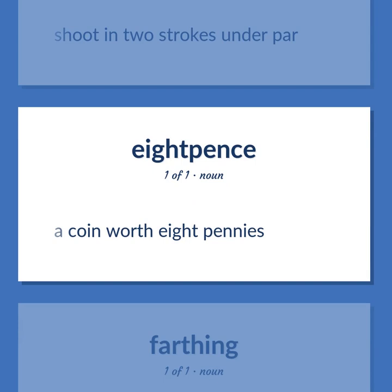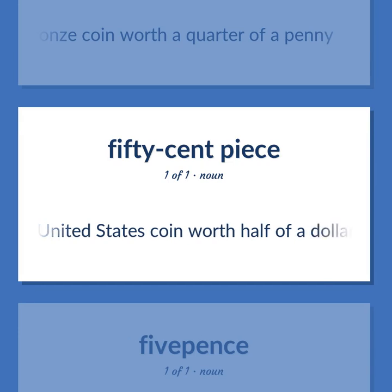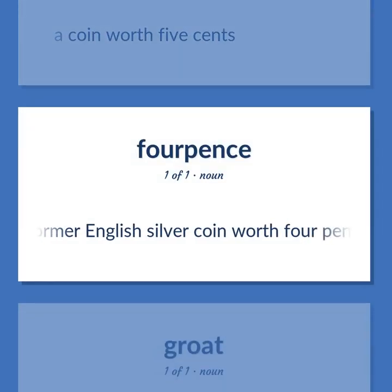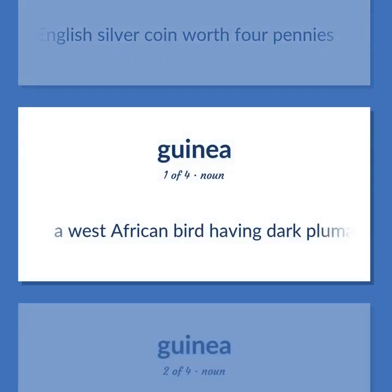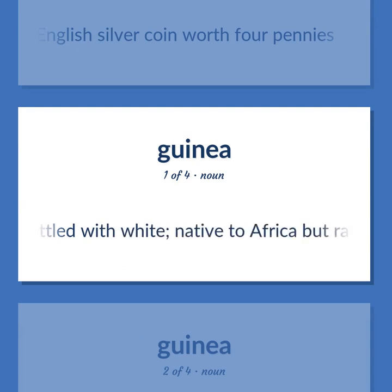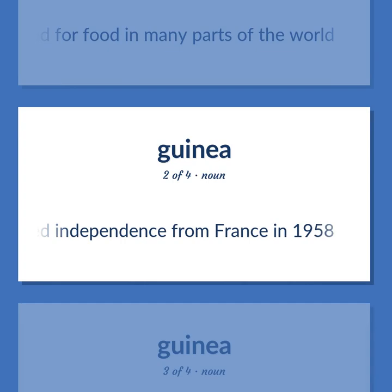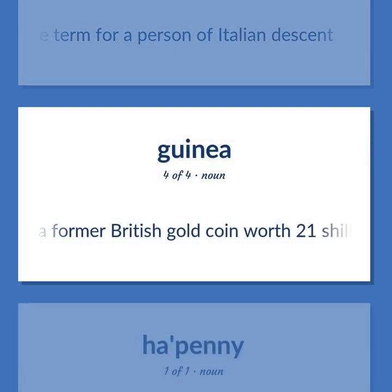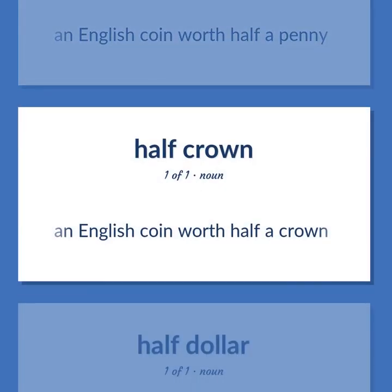A coin worth eight pennies. A former British bronze coin worth a quarter of a penny. A United States coin worth half of a dollar. A coin worth five cents. A former English silver coin worth four pennies. A West African bird having dark plumage mottled with white, native to Africa but raised for food in many parts of the world. A republic in Western Africa on the Atlantic, formerly a French colony, achieved independence from France in 1958. Ethnic slur — offensive term for a person of Italian descent. A former British gold coin worth 21 shillings. An English coin worth half a penny. An English coin worth half a crown.